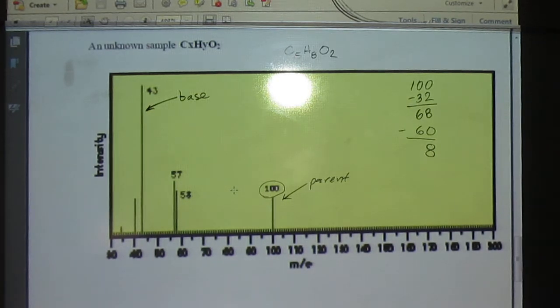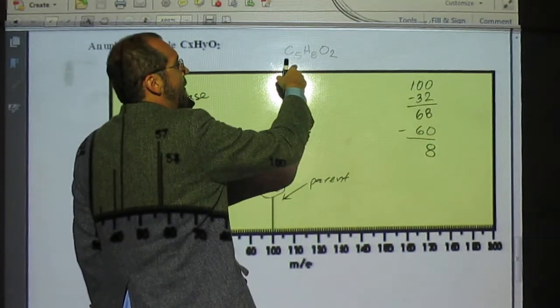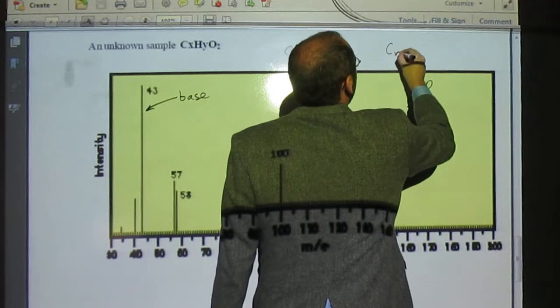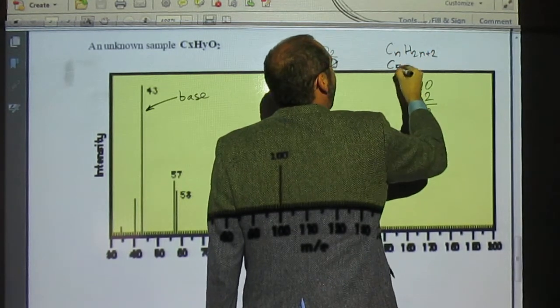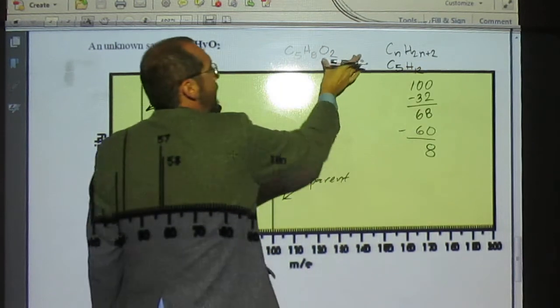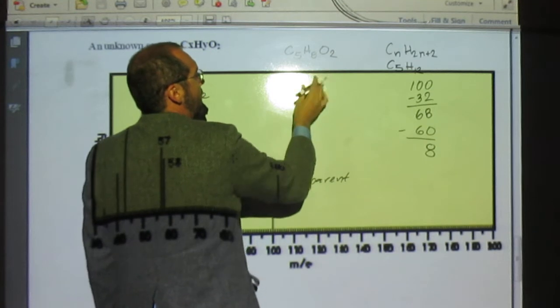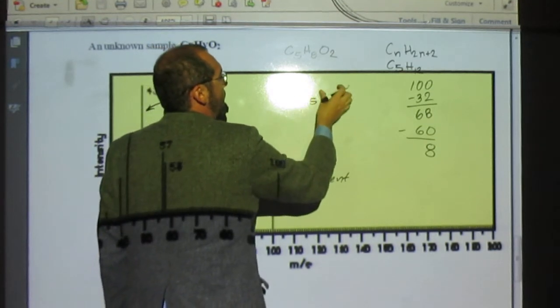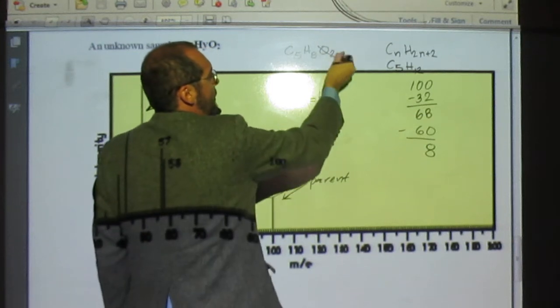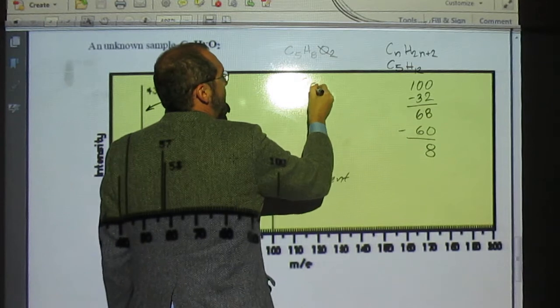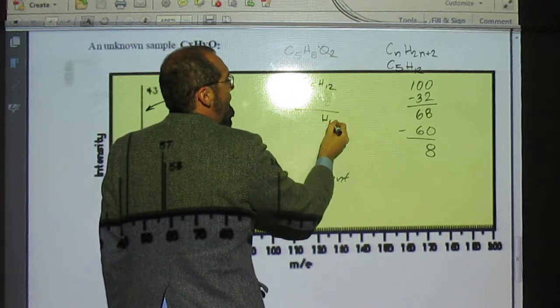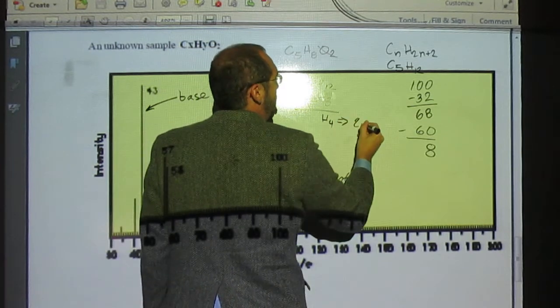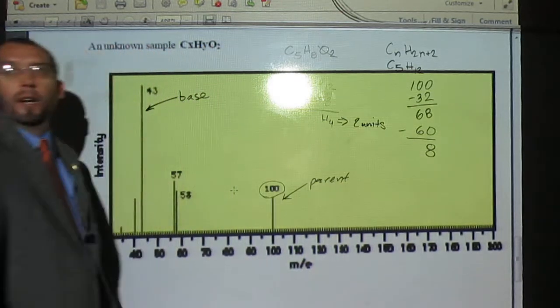And then the next thing we should be able to do is do our units of unsaturation. C5H8, it should be H because it's CnH2n plus 2, right? So C5H12. And so we can just take away the oxygen. We should have C5H12, but that gives us H4. So how many units? Two units of unsaturation.